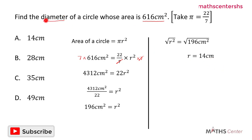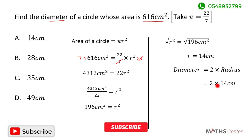Remember the question asked us to find the diameter of the circle. The diameter of a circle equals 2 times the radius. We found the radius to be 14 cm, so the diameter equals 2 times 14 cm, which gives us 28 cm. The diameter of the circle is 28 cm.